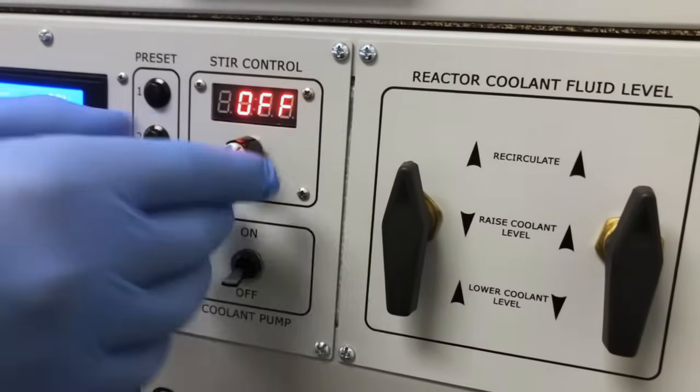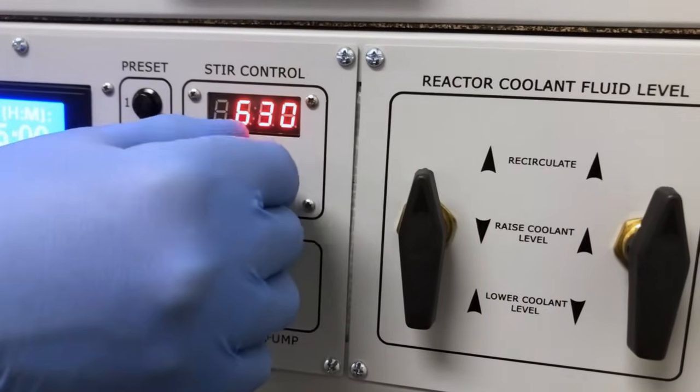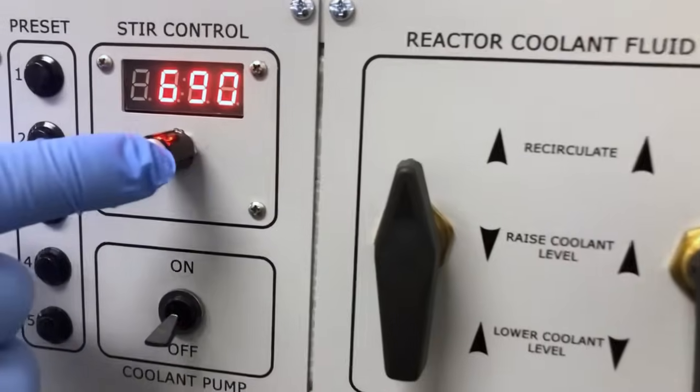The stir control allows you to set the speed of the heavy-duty stirring magnets under the reaction chamber. Simply press the control knob and turn it on or off.